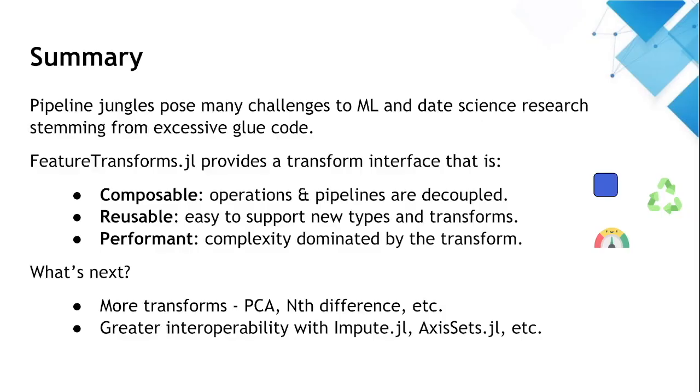So in summary, pipeline jungles pose many challenges to machine learning and data science workflows. But some of the symptoms of complexity can be mitigated by addressing the root causes stemming from excessive use of glue code. Feature Transforms provides one potential avenue to do this by focusing on composability, reusability, and performance of these transforms. In future, we hope to continue to add more transforms to the package and integrate it more closely with our other feature engineering packages, namely impute.jl and axis sets, which I also encourage you to check out. Thank you for your attention.